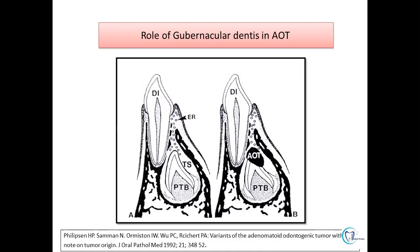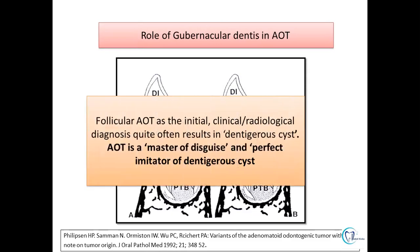Philippsen et al. gave the concept of the role of gubernacular dentis in the development of AOT. The gubernacular dentis is a bony canal which lies between the crypt of the primary and the permanent tooth. Whenever the permanent tooth follicle develops within the gubernacular dentis, there will be development of the follicular variety of AOT. If it bypasses the gubernacular dentis, it gives rise to the extrafollicular variety. The follicular variety initially resembles dentigerous cysts in clinical and radiological presentation; therefore, AOT is considered a 'master of disguise' or 'perfect imitator' of dentigerous cysts.